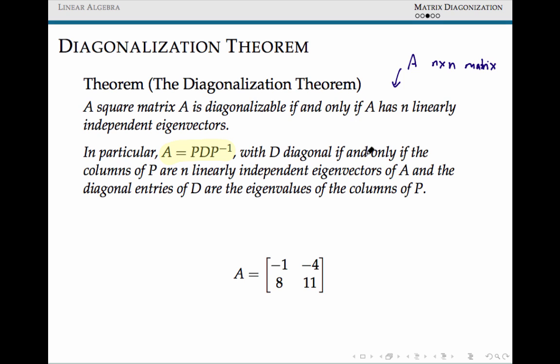One of the nice things that we get out of this is our diagonal matrix itself, if it exists, is actually going to have as entries all of our eigenvalues. And the columns of this invertible matrix that we're going to be interested in is going to be a linearly independent set of all of our possible eigenvectors.